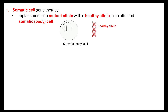Somatic cell gene therapy is where we're going to replace a mutant allele with a healthy allele in an affected somatic body cell. This body cell has obviously differentiated — it depends what type of cell we're talking about, whether that's pancreatic cells or cells within our alveoli. We call them somatic cells because they are the body cells, found all over the body and very specific to the role that they play.